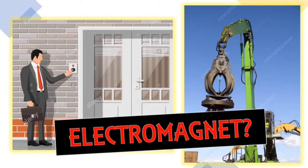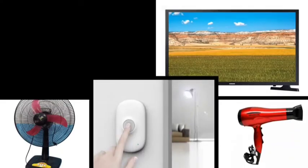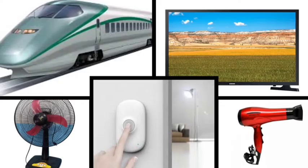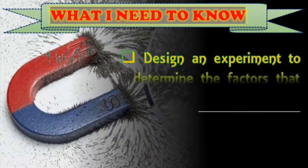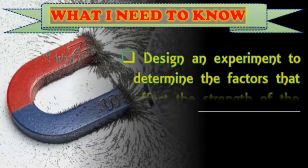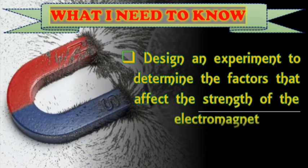Electromagnetism has a lot of application nowadays. Starting from electric phone, from your blower, from the doorbells, from your television, to the advanced type of bullet trains is powered by electromagnet. So in this topic, you will be able to design an experiment to determine the factors that affect the strength of the electromagnet.